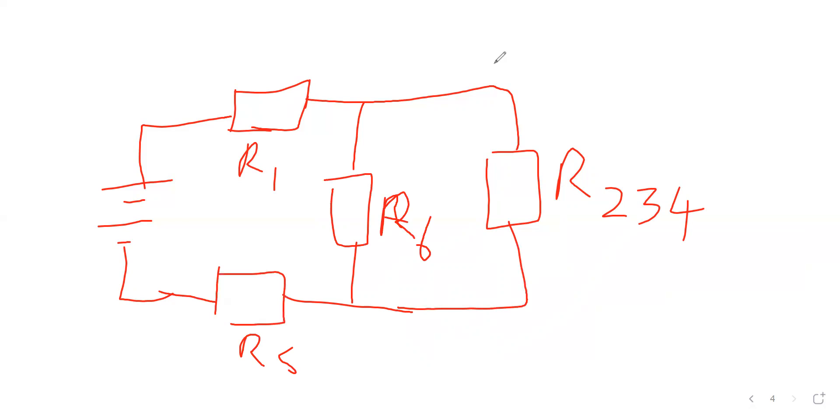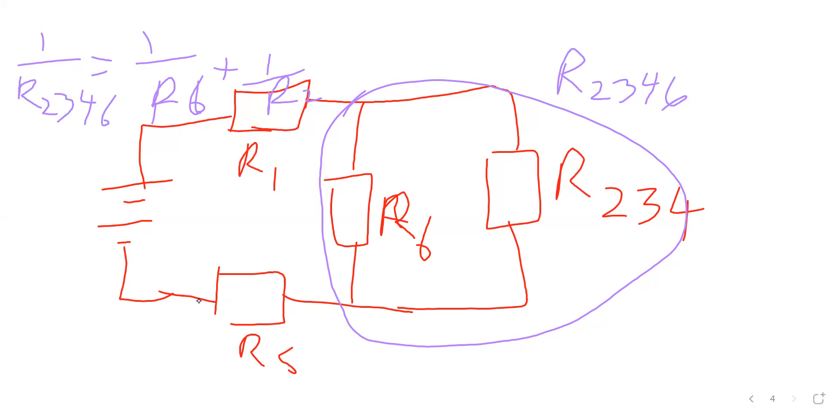So R234 is in parallel to R6. What is the total equivalent resistance of this combo? I can easily call that R2346. R6 and R234 are in parallel. The simple way to find the total resistance is to say 1 divided by R2346 is equal to 1 over R6 plus 1 over R234.